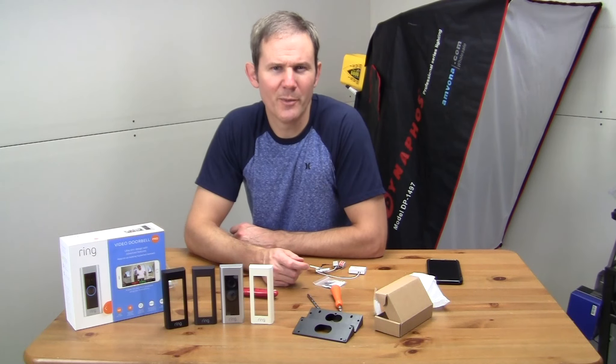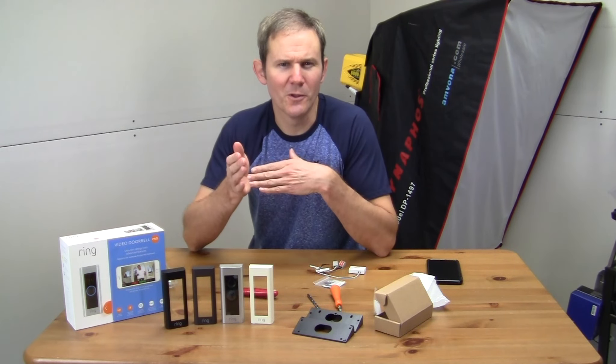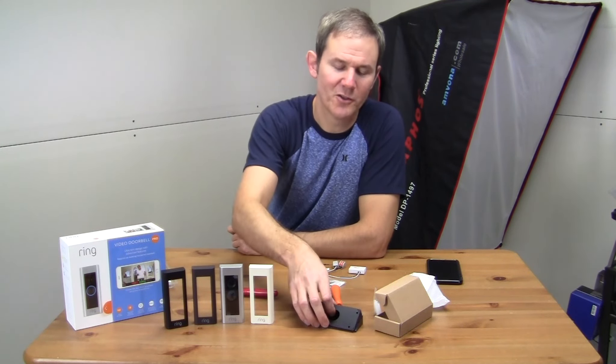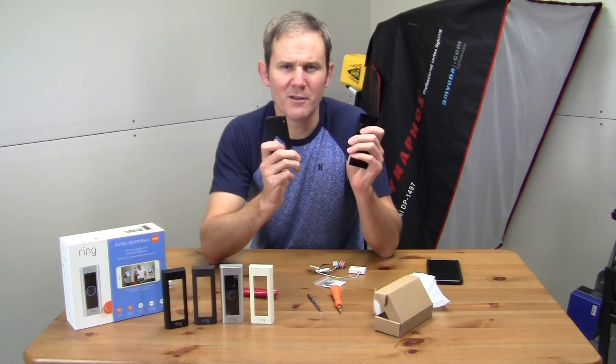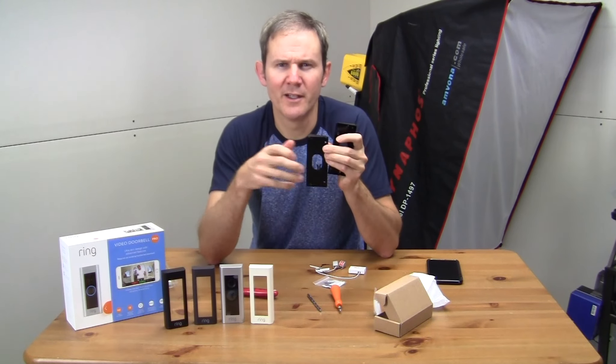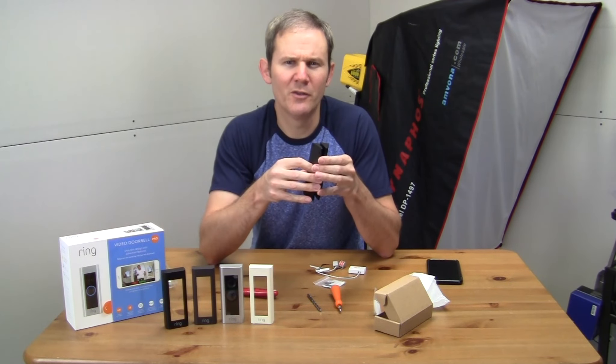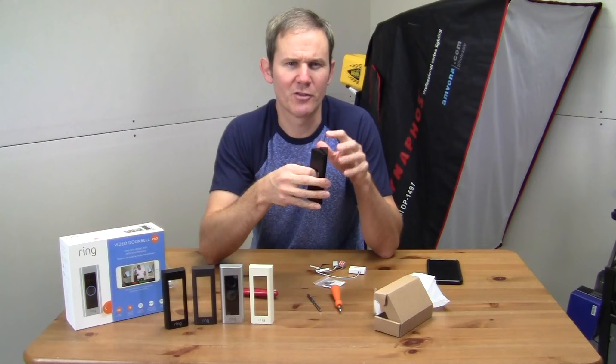Since the placement of my old doorbell is at a 90 degree angle to my door, I'll be using these angle brackets to point the camera towards the approach area of my door instead of my neighbor's yard. More details on these brackets and the ring doorbell are available on my blog at newfiborik.com. I'll put a link in the description below.